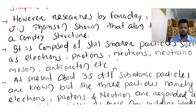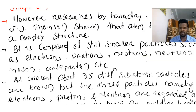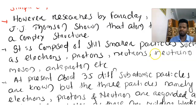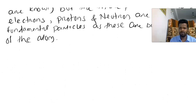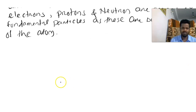But only three particles — electron, proton, and neutron — are called the fundamental particles of matter. They are also called the building blocks of matter. Electron plus proton plus neutron combine to form matter. The constant particles in an atom are electron, proton, and neutron.